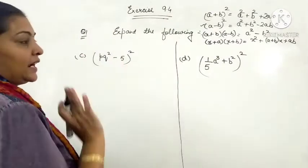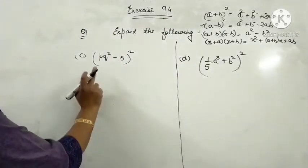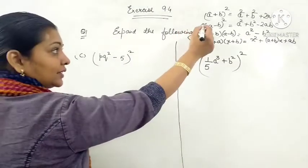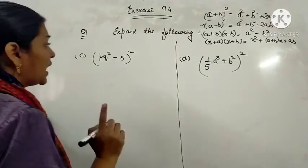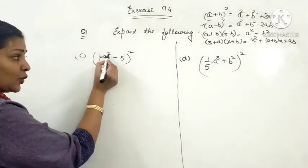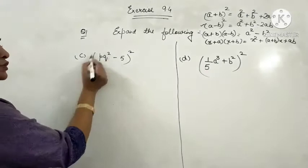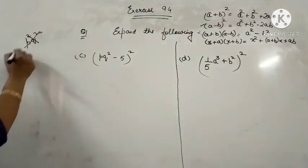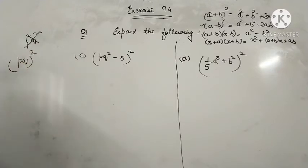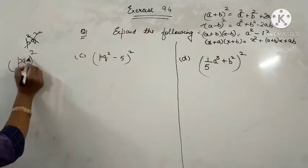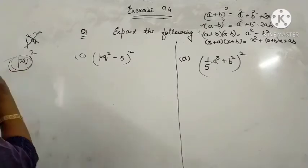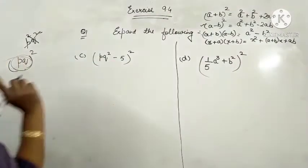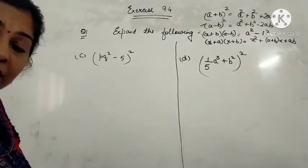Let's move to part C and part D. In part C it is PQ squared minus 5. This identity is applicable but you have to note that the square belongs to Q only, not P. Some students think it is P squared Q squared, but that is wrong. If it is within the bracket then the power belongs to both variables, but without a bracket the power belongs to only Q.